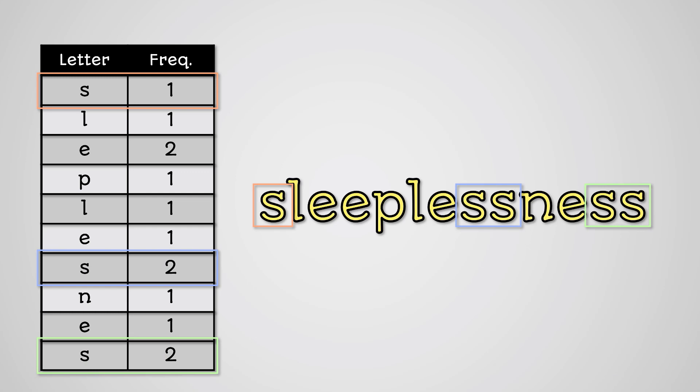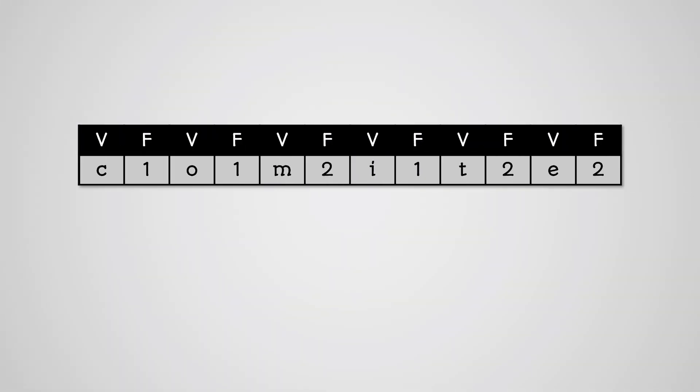You store the letter and the frequency of that letter together as a pair. If we were to look at the word committee as an RLE frequency value table, we would get the following where F is frequency and V is value.